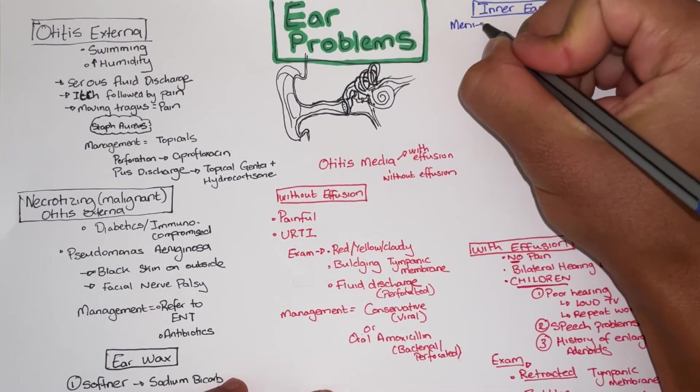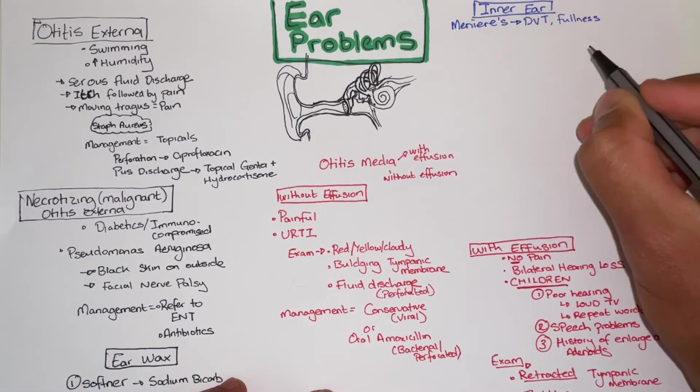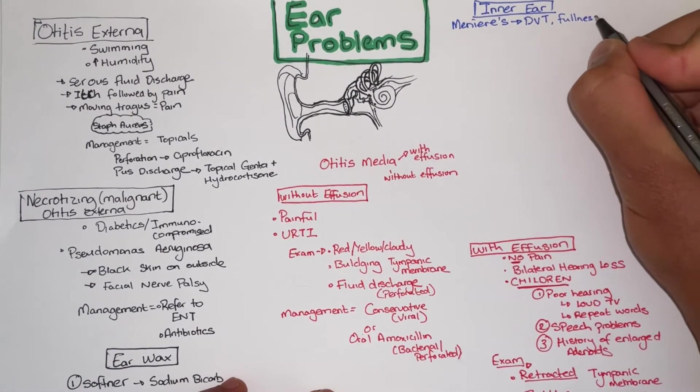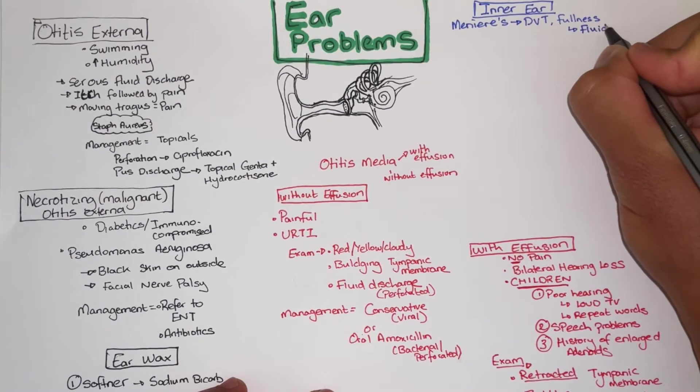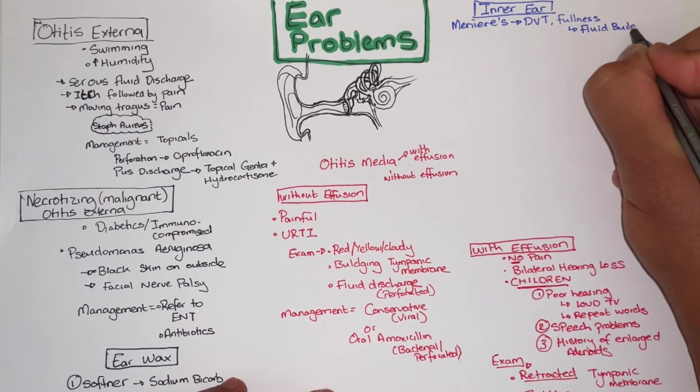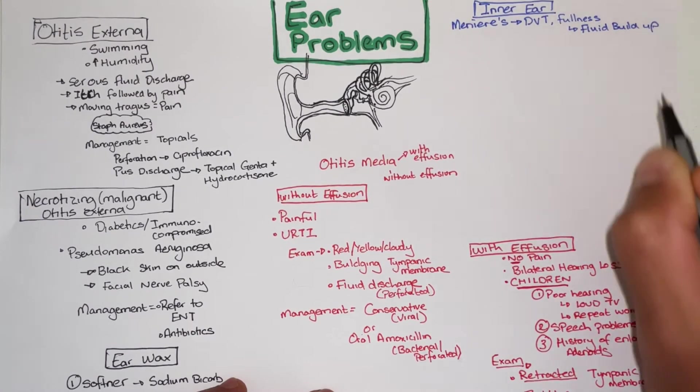Lastly the inner ear is where you get the more complex problems starting with Meniere's. This presents as deafness vertigo and tinnitus with a feeling of fullness in the ear. This is a result of fluid buildup in the inner ear.